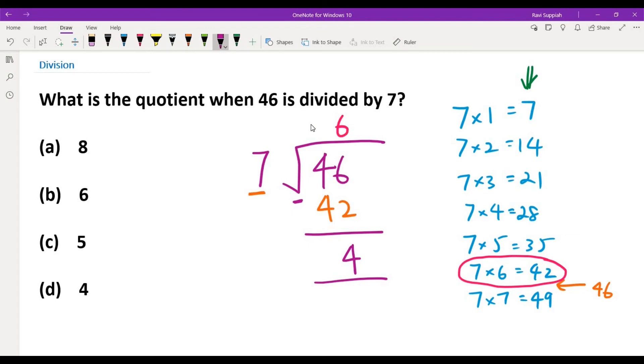The answer we get is 6 remainder 4. So 6 is the quotient, and 4 is the remainder.